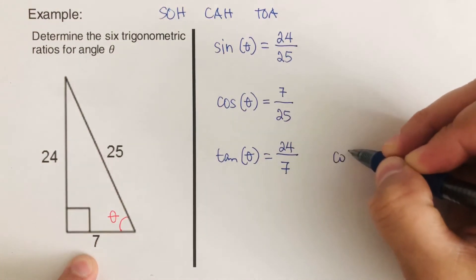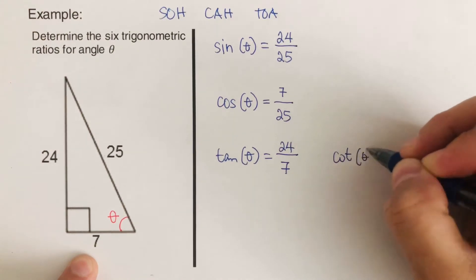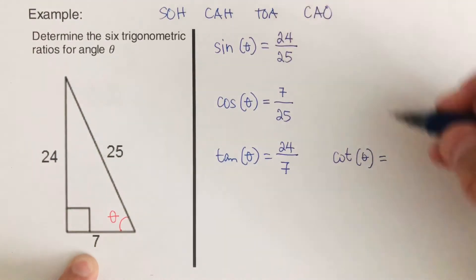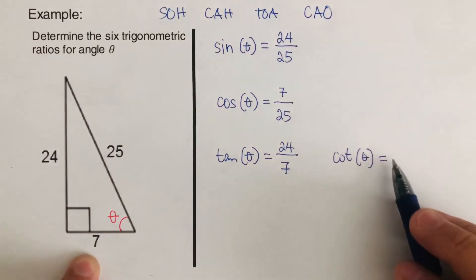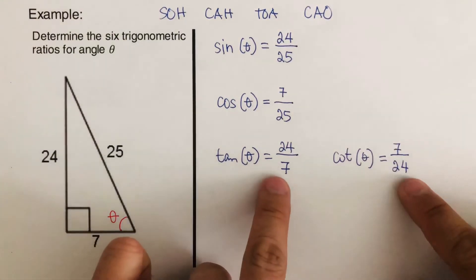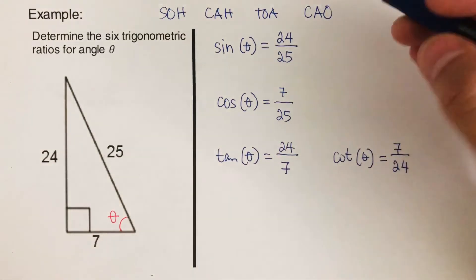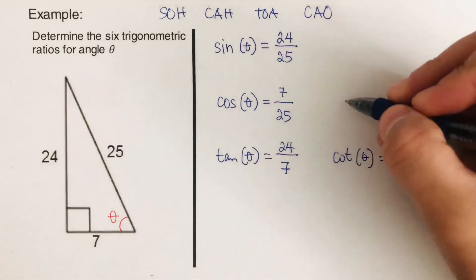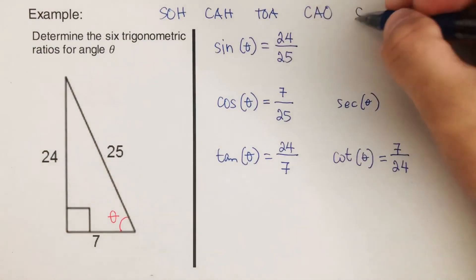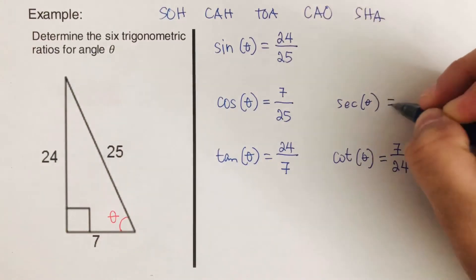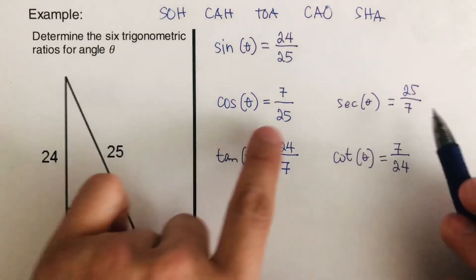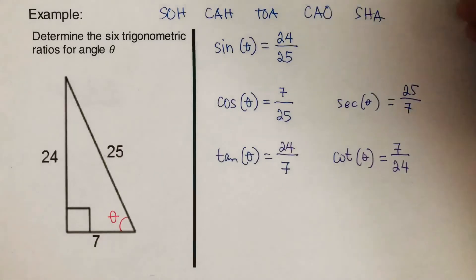Cotangent pairs up with tangent, so cotangent theta — using COT — that would be adjacent over opposite, so our adjacent is 7 and the opposite is 24. As you can see they were just flipped. For secant theta, that would be hypotenuse which is 25 over adjacent which is 7 — the fractions have been flipped.